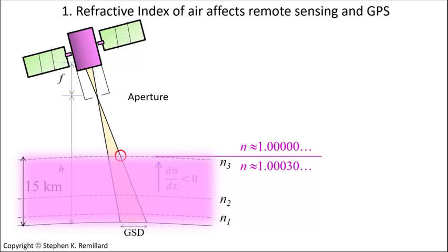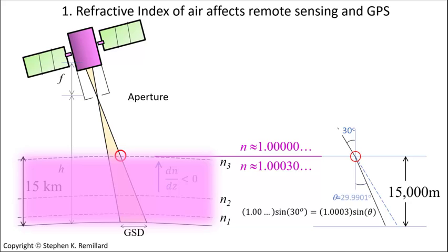For simplicity, treat the atmosphere as a homogeneous dielectric that suddenly ends at the top of the stratosphere. If this satellite attempts to ping the location obliquely at 30 degrees, Snell's Law leads to the conclusion that the location will be off by 3.5 meters.